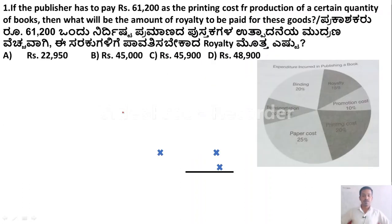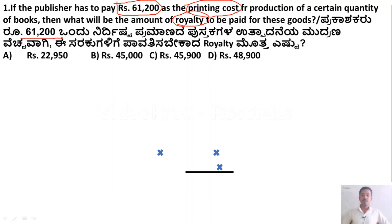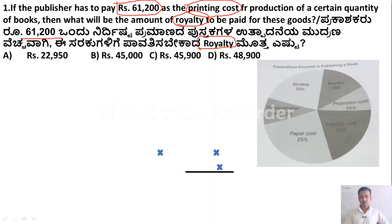Let us solve the questions one by one. The first question: the publisher has to pay Rs. 61,200 as printing cost. We need to find the royalty amount. From the pie chart, printing cost is 20% and royalty cost is 15%.